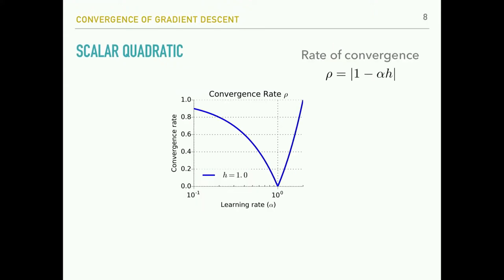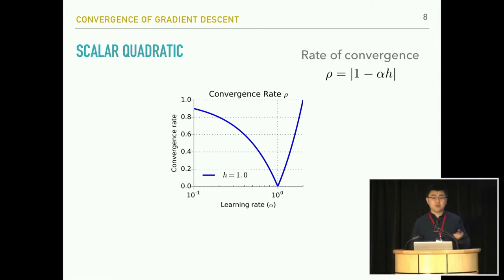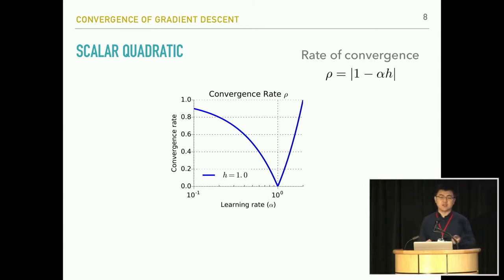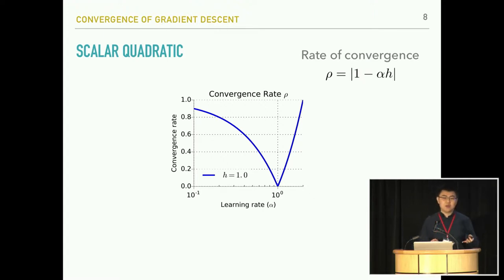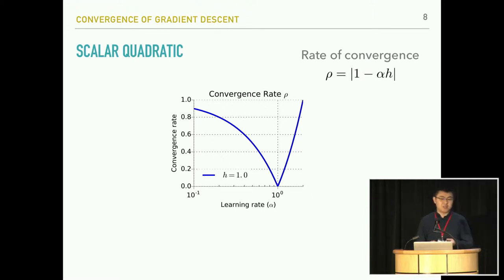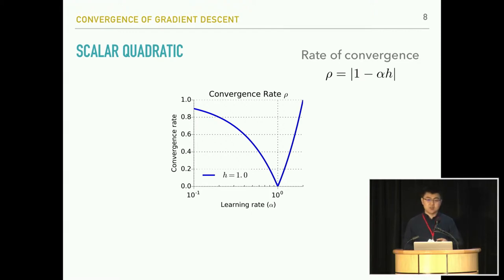At each individual step, the distance towards the optimal point will reduce or contract by a factor of rho. Thus, the smaller the convergence rate is, the faster gradient descent may progress. We can see in this example that if you smartly pick the optimal learning rate, you can achieve convergence within a single step.